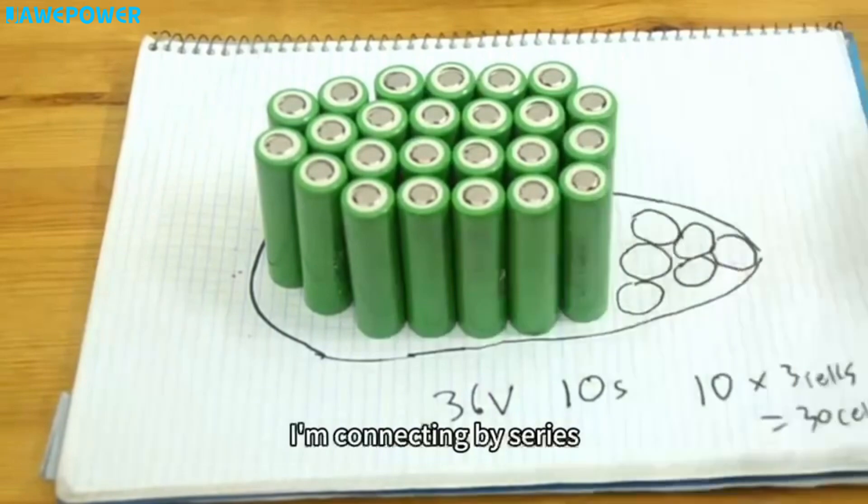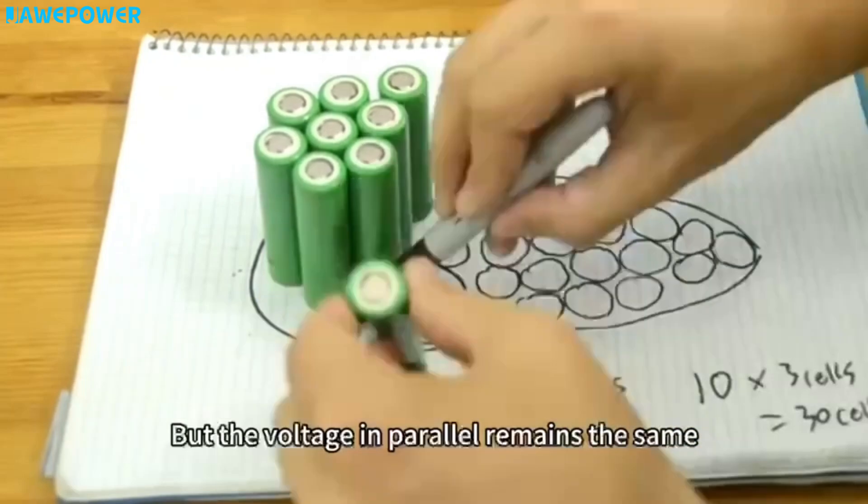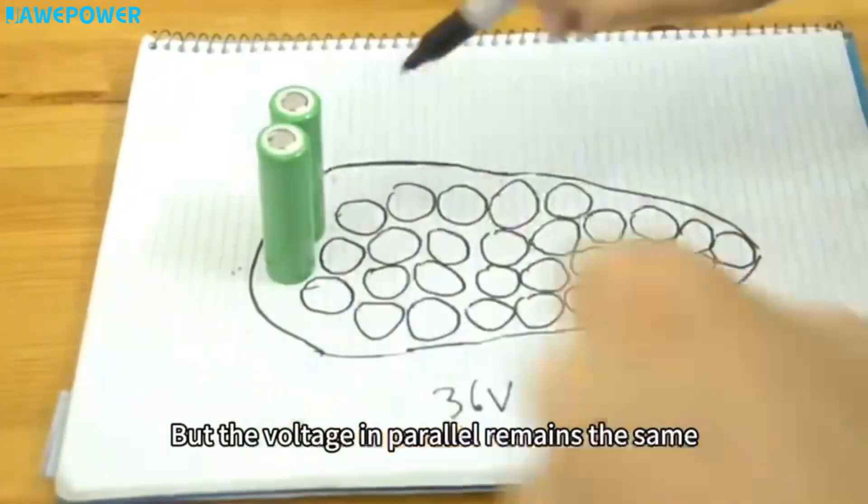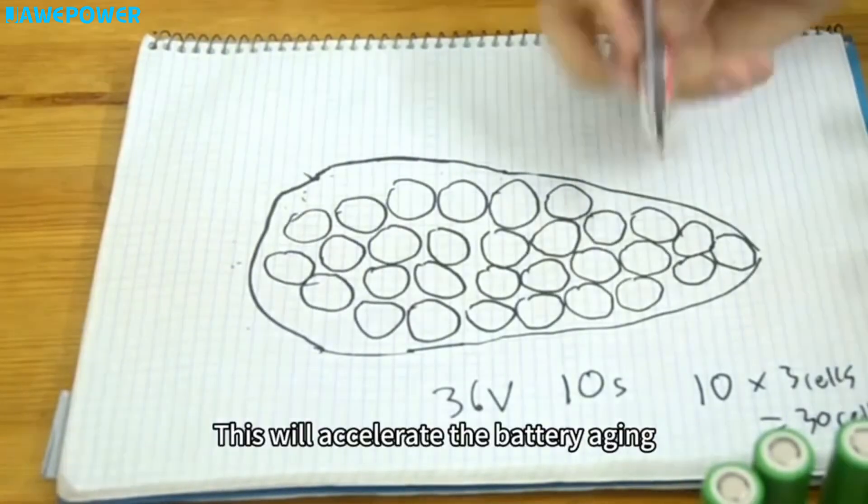Here, I'm connecting by series. Of course, it can also be done in parallel. But the voltage in parallel remains the same. The current becomes larger. This will accelerate the battery aging.